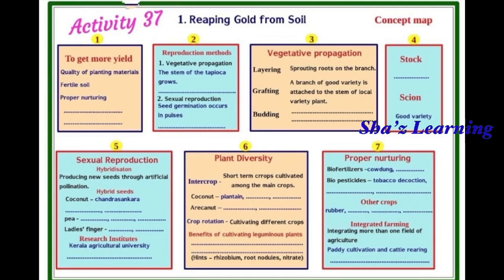Then, plant diversity — intercrop. Intercrop means short-term crops cultivated among the main crops. For the main crops, the intercrop will be planted. For example, when we plant coconut, we can plant plantain as an intercrop.